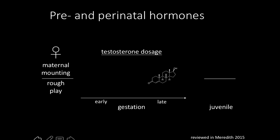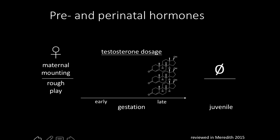If you give low doses of testosterone late in gestation, mounting behavior is completely unaffected, but rough-and-tumble play is partly masculinized — at levels intermediate between unmanipulated females and males. If you increase to high doses late in gestation, mounting behavior is completely unaffected, but rough-and-tumble play is completely masculinized, at rates indistinguishable from unmanipulated males.